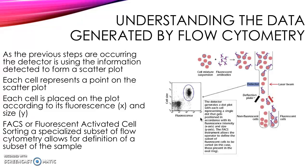To understand the data generated by the flow cytometer: as the previous steps are occurring, the detector is using the information detected to form a scatter plot. Each cell represents a single point on the scatter plot, and each cell is placed on the plot according to its fluorescence on the x-axis or its size on the y-axis.